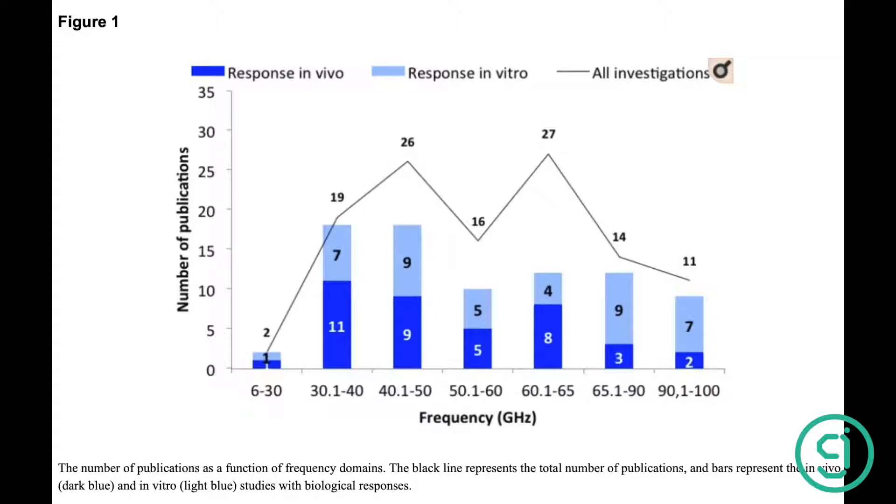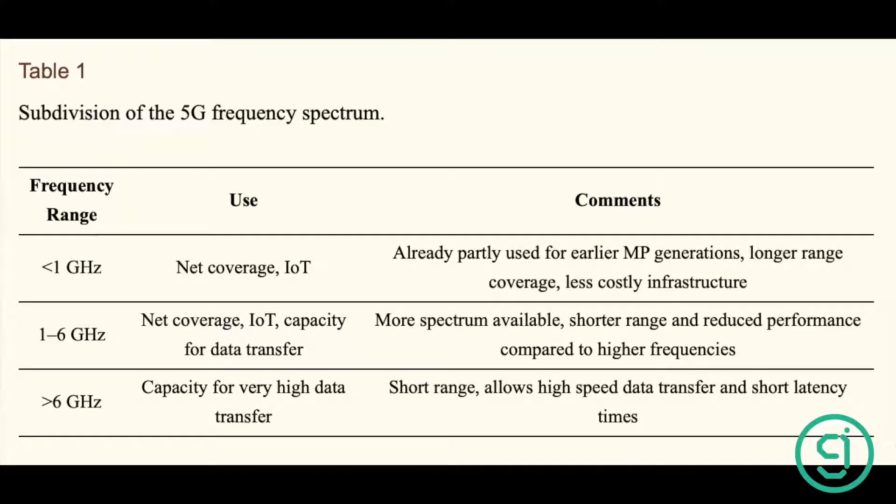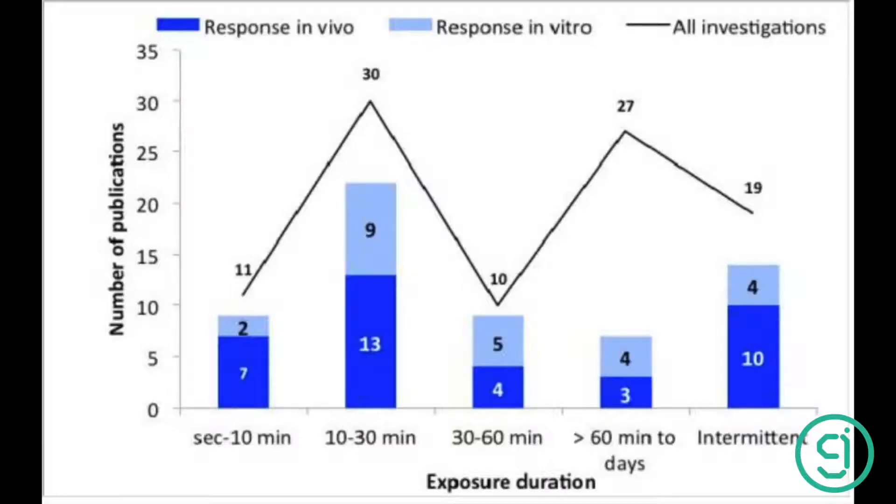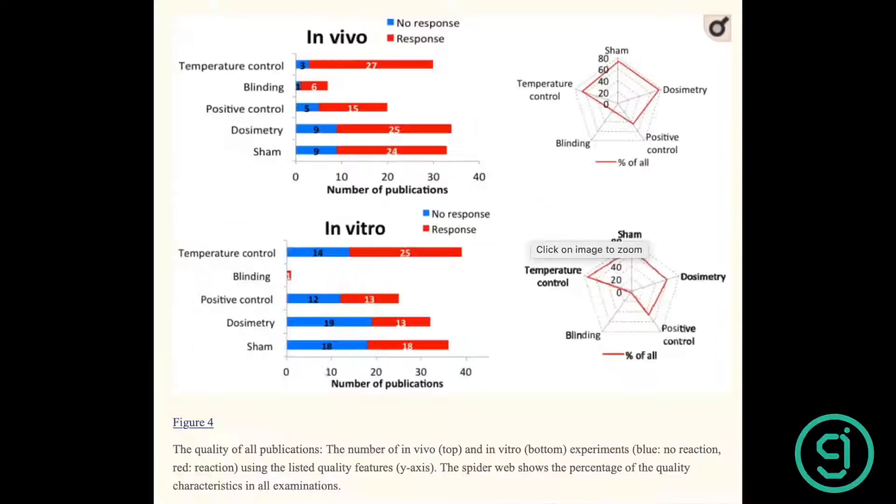This review analyzed 94 relevant publications performing in vivo and in vitro investigations, and each of the studies was characterized by study types of in vivo, in vitro, biological materials like species and cell types, biological endpoint exposure, frequency, exposure duration, and power density results, and certain quality criteria. 80% of the in vivo studies showed responses to exposure, while 58% of the in vitro studies demonstrated effects. The responses affected all biological endpoint studies.